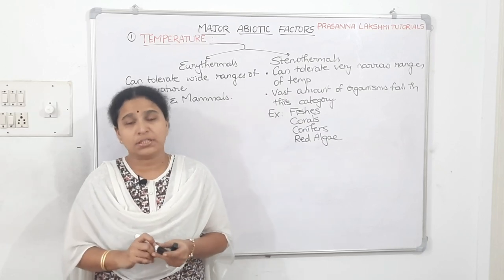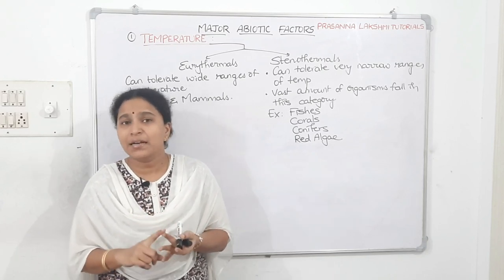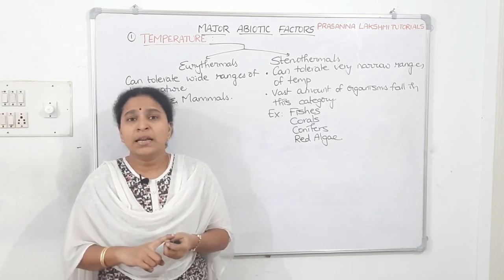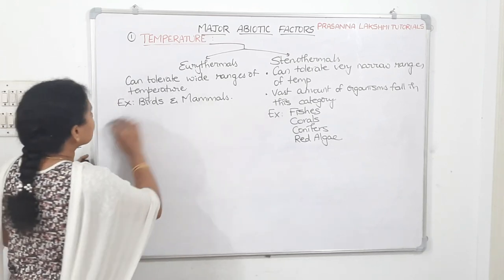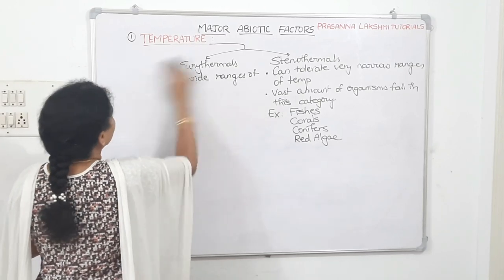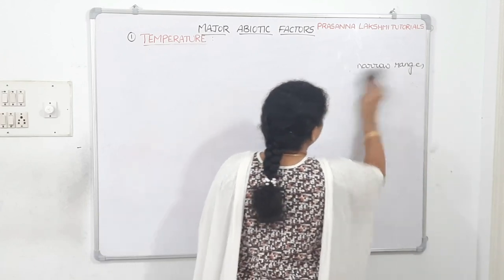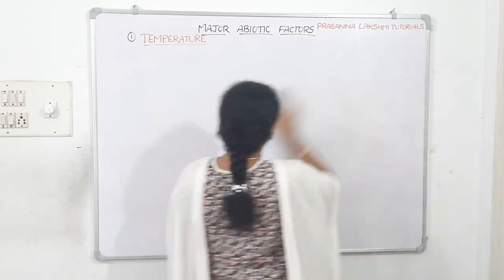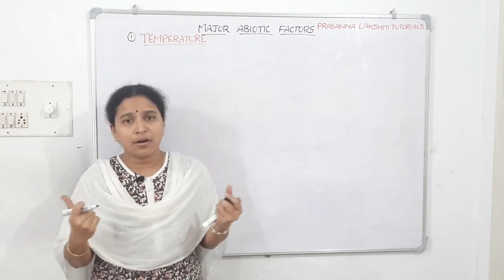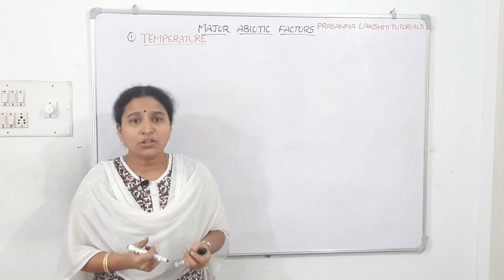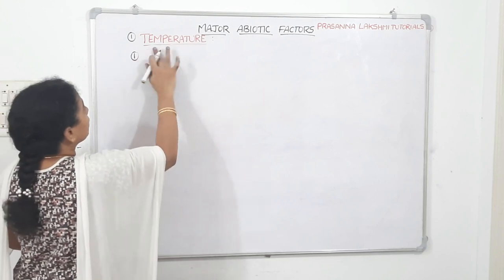There are certain rules related to temperature: Gloger's rule, Bergmann's rule, Allen's rule, Rensch's rule, and Jordan's rule. These rules have been asked many times in NEET examinations. Let us go through them one by one.